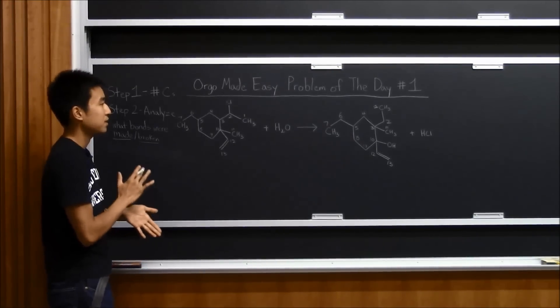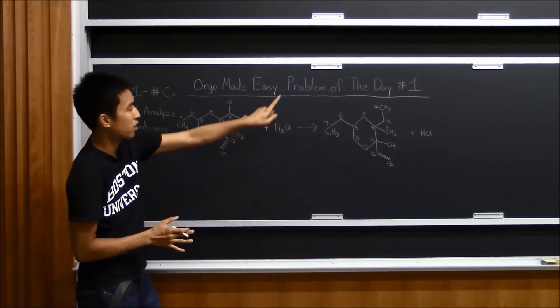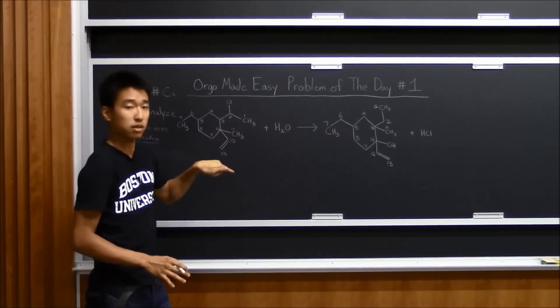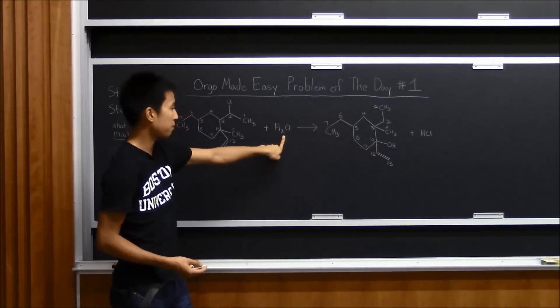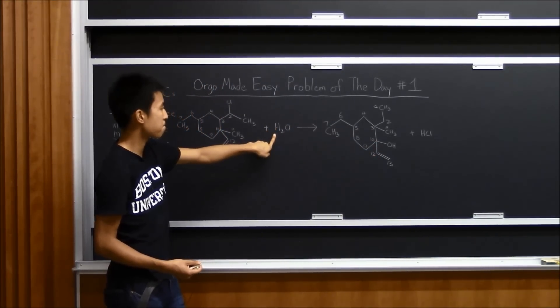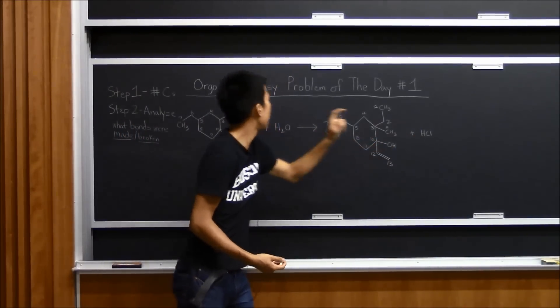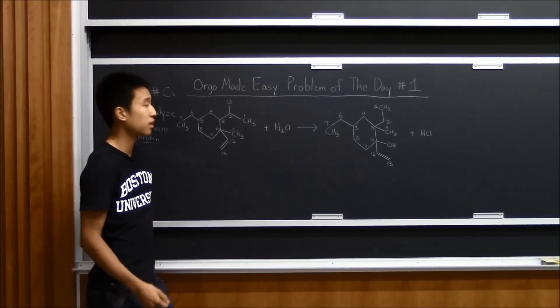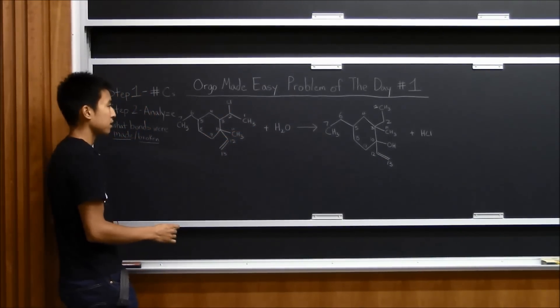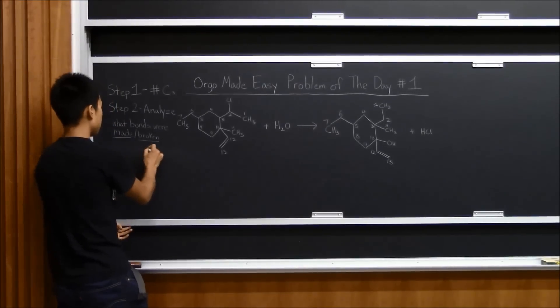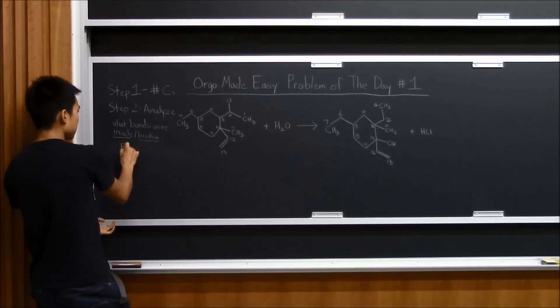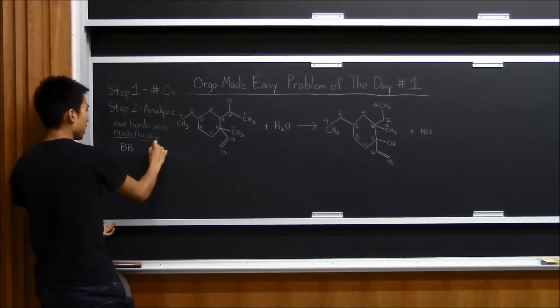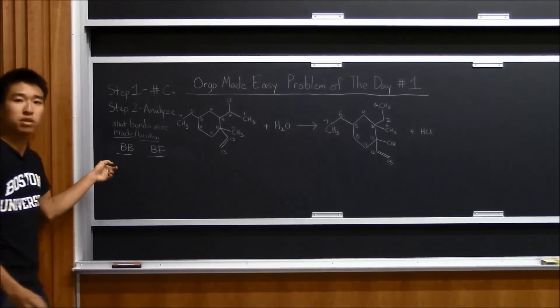Alright. So what I was saying before was the water. Because we don't have water in our product, we have HCl, that means that the oxygen must have entered our molecule. Which makes sense, because look, we have an OH in our molecule. So that OH probably came from the water. And then the other H in the water probably became the H of the HCl that the Cl is attached to in the product. Okay? So I'm going to make a little list for myself. I always do... Okay, I'm going to flip this, because it says made and broken. But I'm going to do BB for bonds broken and BF for bonds formed. So bonds broken and bonds formed.